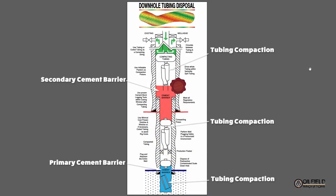Now let's discuss the method of downhole tubing disposal. The dotted area at the bottom represents the reservoir, while the blue area represents the primary cement plug which isolates the reservoir. The dotted area of the reservoir can be isolated by, for example, cutting off the tailpipe and squeezing cement into the lower end of the well, shown in blue. The next step in this example would be to compact the tubing by splitting it vertically and pushing a whole piece of tubing into a split piece of tubing using an inflatable packer.